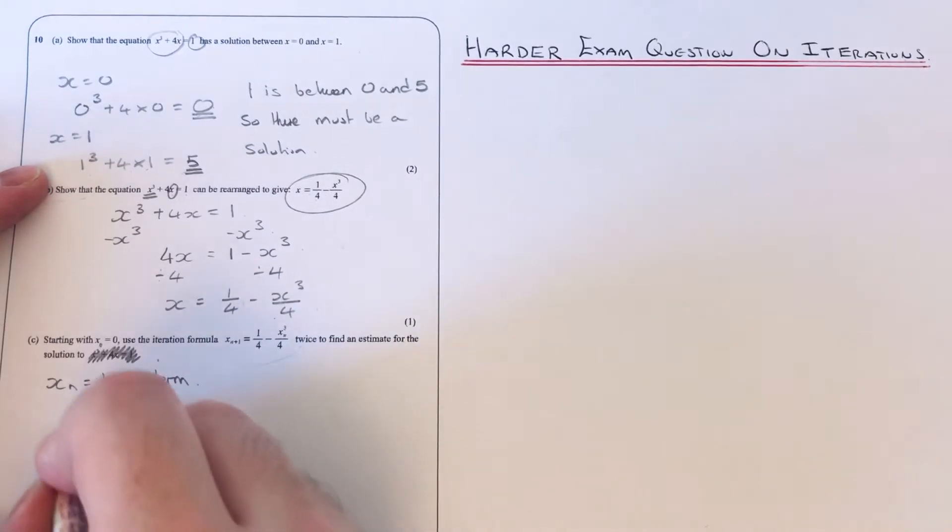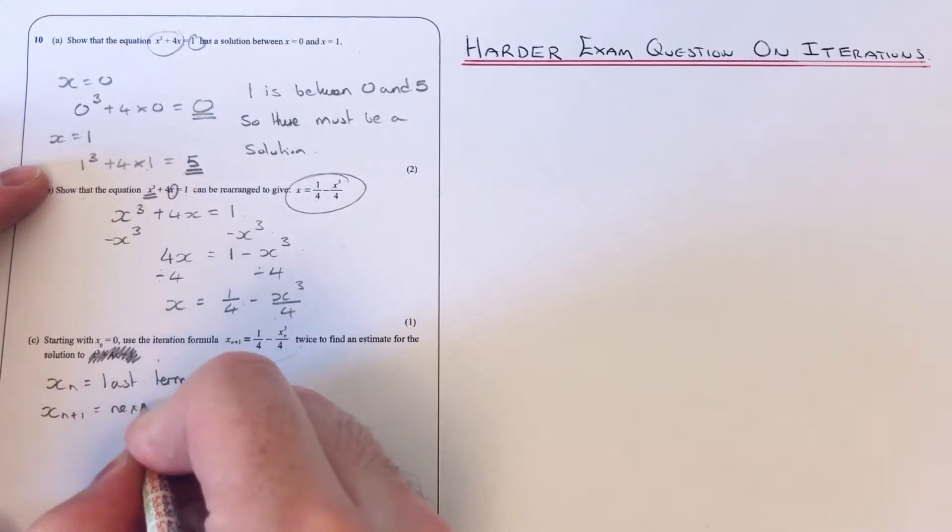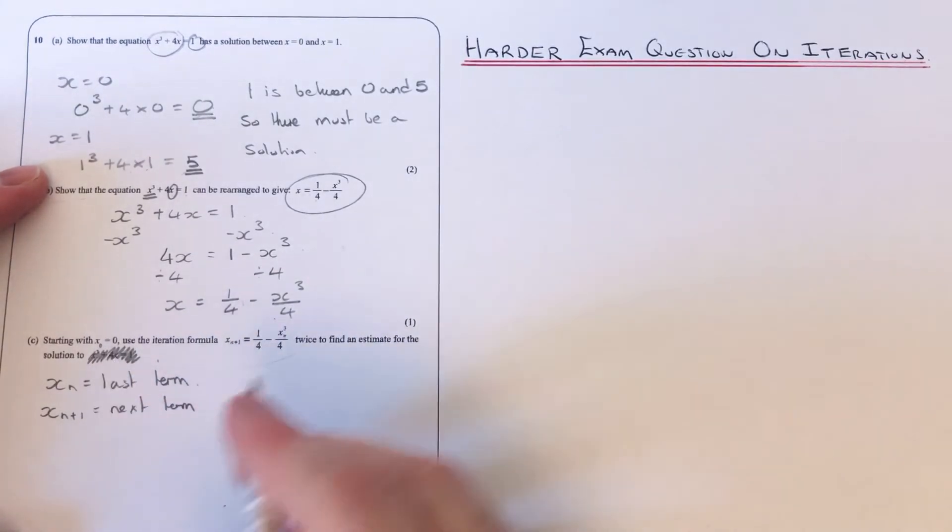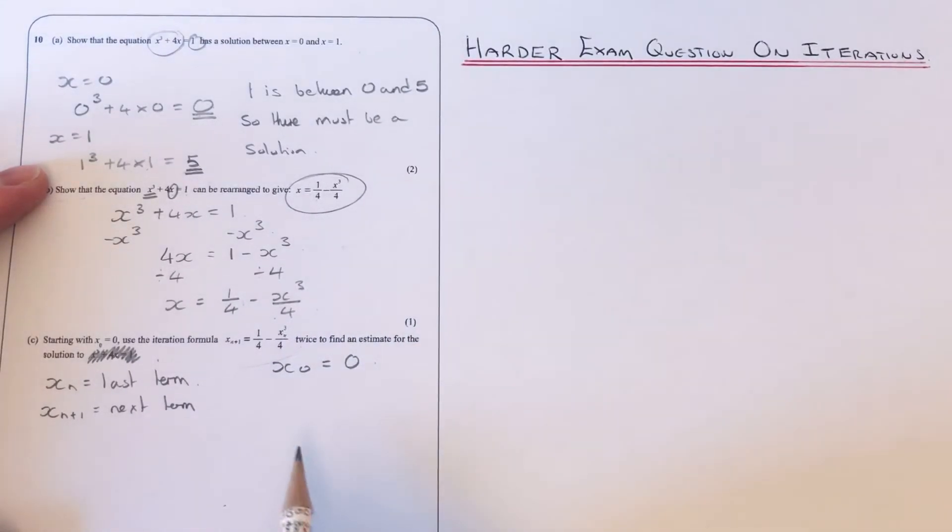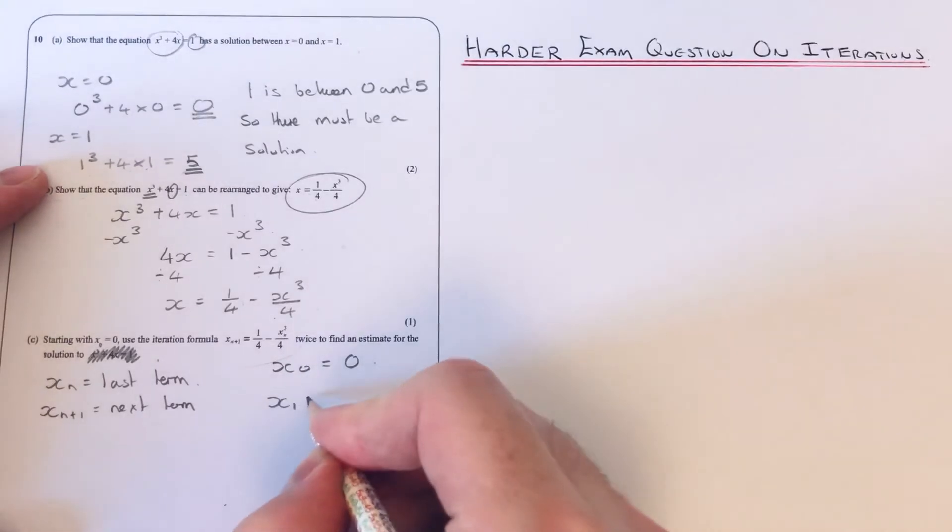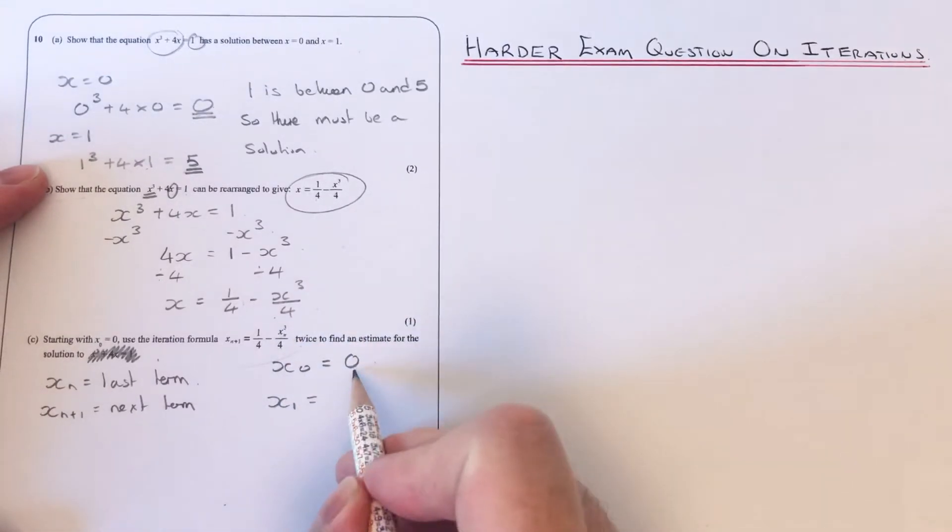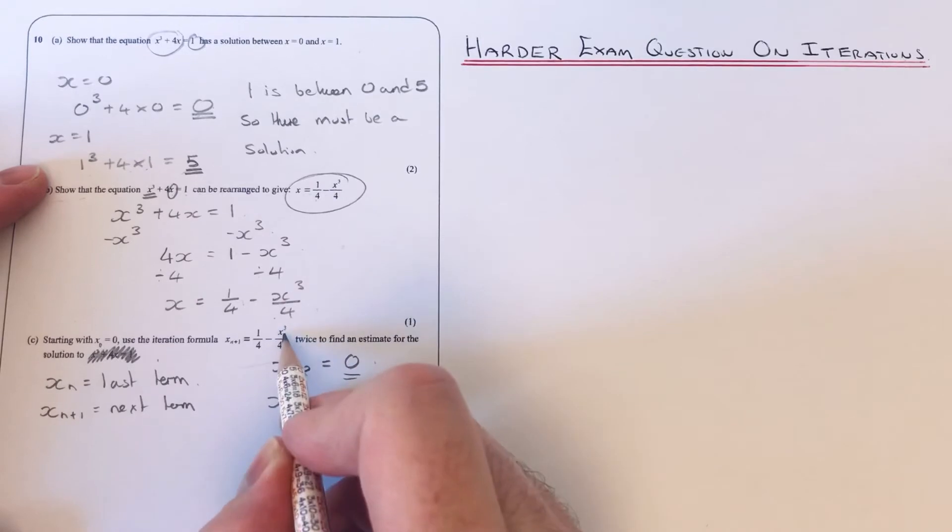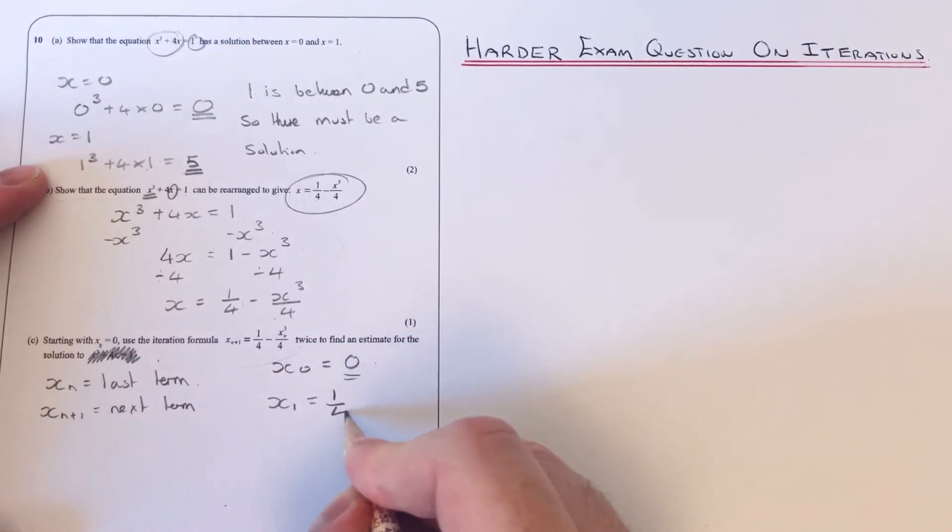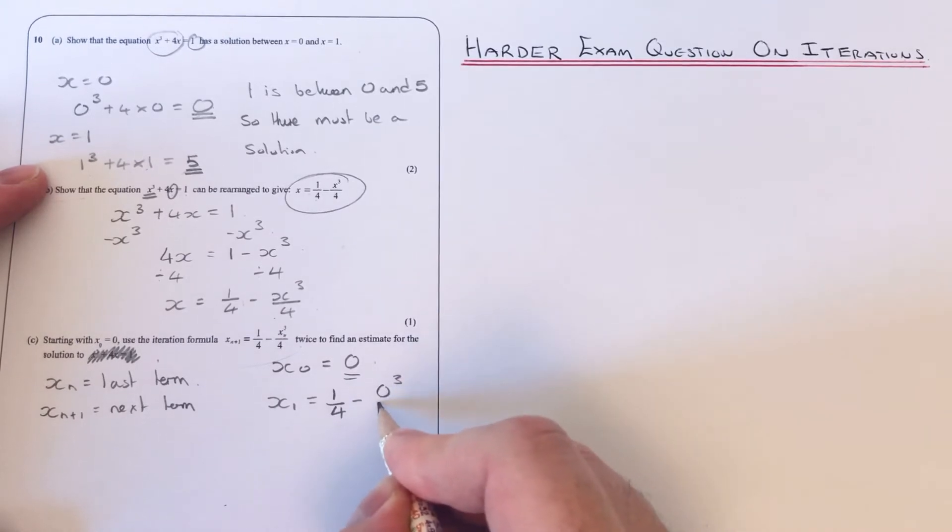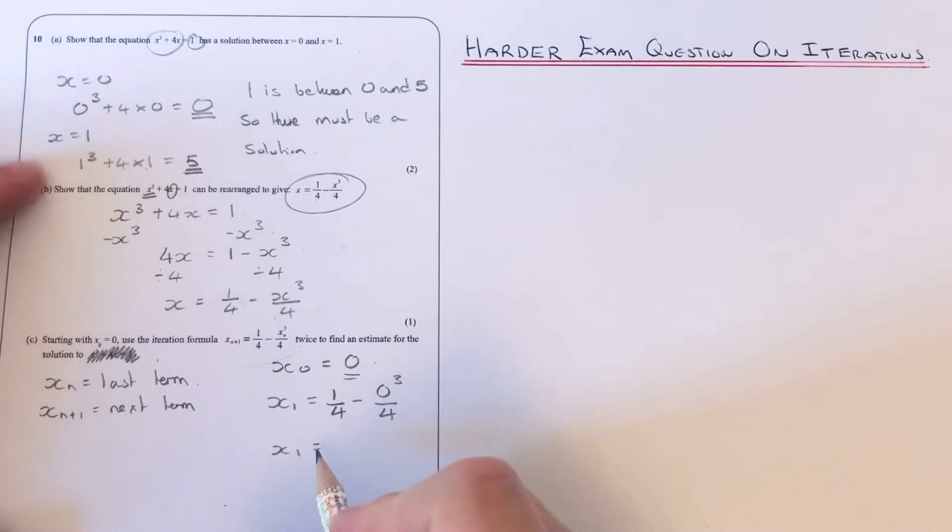Okay, so our first term that we've got is 0. So to get our next term x₁, we're going to put 0 into this iterative formula. So we change that xₙ to 0, so it'll be ¼ - 0³/4. It's normally a calculator question.